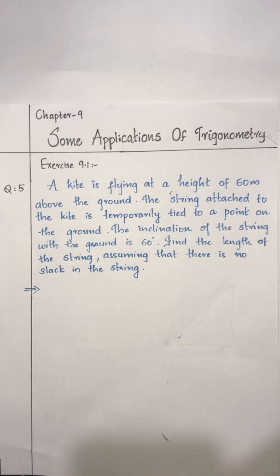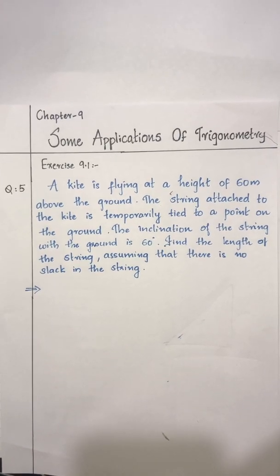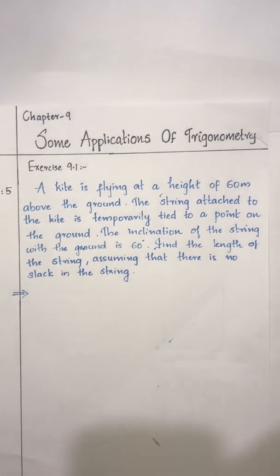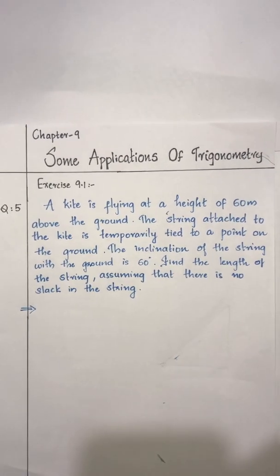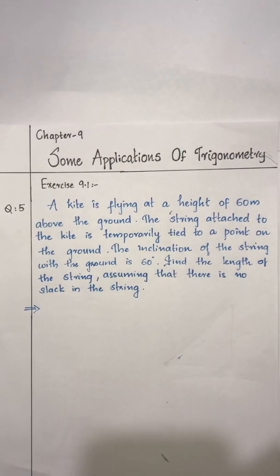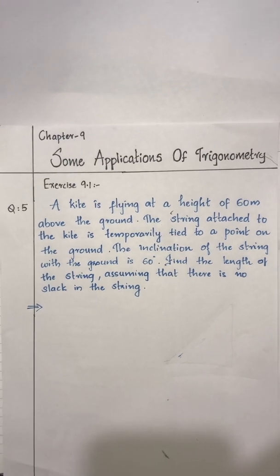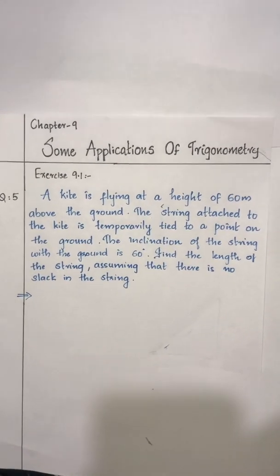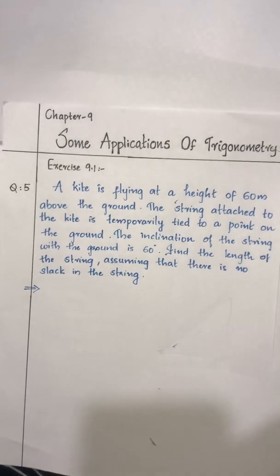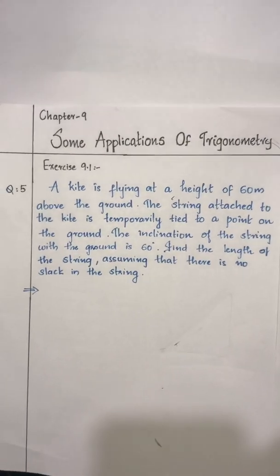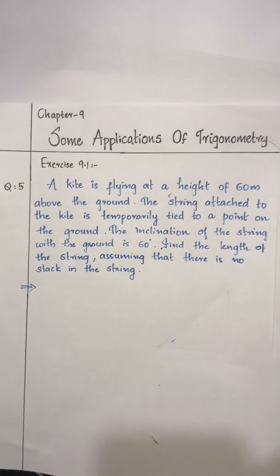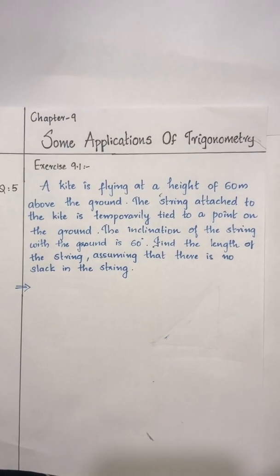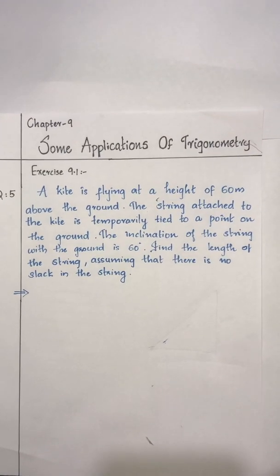Hi students, today we are going to discuss question number 5 from exercise 9.1. The question is: a kite is flying at a height of 60 meters above the ground. The string attached to the kite is temporarily tied to a point on the ground. The inclination of the string with the ground is 60 degrees. Find the length of the string, assuming that there is no slack in the string.